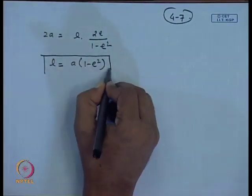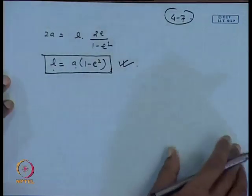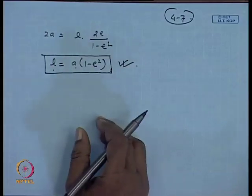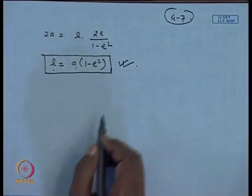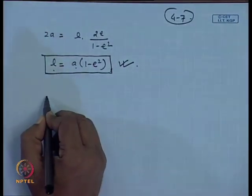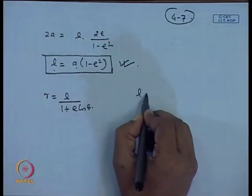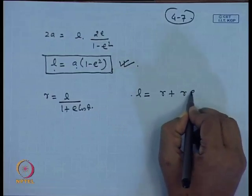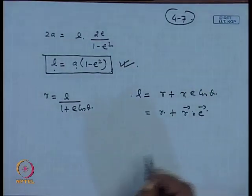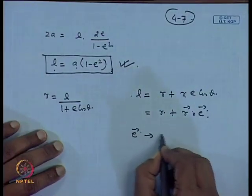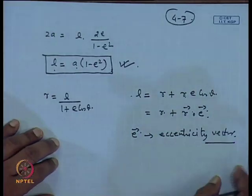So the semi-latus rectum l equals a(1 − e²). The conic section equation R = l/(1 + e·cos θ) can also be written in vector form as l equals R plus R·e·cos θ, which is written as r dot e (eccentricity vector), where e is the eccentricity vector. The angle between the r vector and the eccentricity vector gives cos θ, and this eccentricity vector appears in the equation of motion of heavenly bodies.